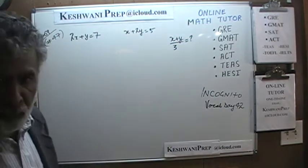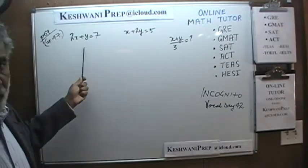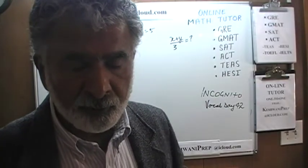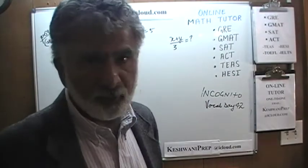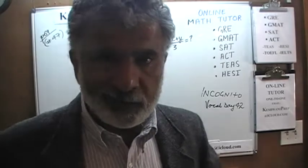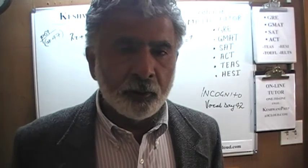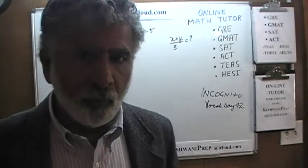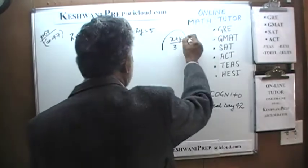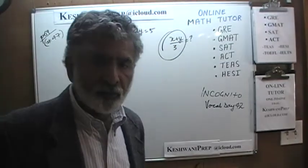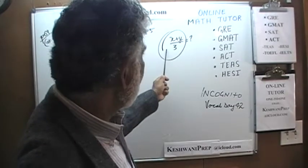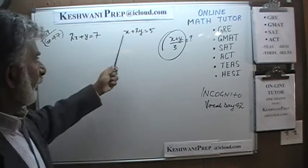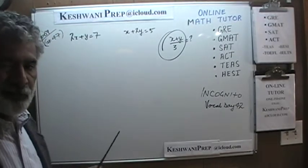Listen carefully. One way to go about this is, because we have two independent equations, to combine them and solve for x and y individually — that is the classical way. But what you have to understand is that almost 90% of the time, when they ask a question involving some combination of two variables, this value can be found by either adding the two equations or, if that doesn't work, subtracting one equation from the other.